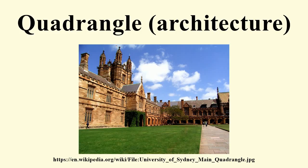The University of Chicago's Gothic campus is also notable for its innovative use of quadrangles. All five barracks at the Citadel feature quadrangles with red and white squares, which are used for formations by the Corps of Cadets. Quadrangles are also found in traditional Kerala houses, known as the Nalukettu.